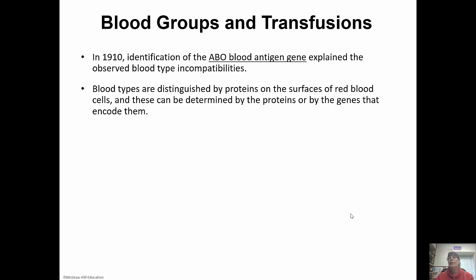Type O is the opposite: if you're type O, you don't have any antigens on your red blood cells, but you have both antibodies — antibody A and antibody B. So type O people can only receive type O blood; anything else their immune system will attack.